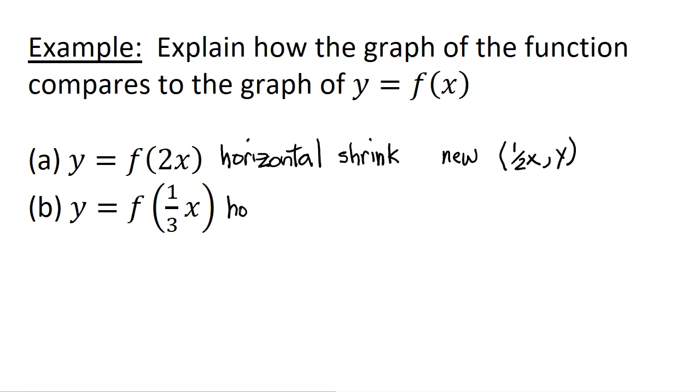It's inside the argument of the function, so it's a horizontal stretch this time. What would we have to do to get back to x? Well, our new point, we'd have to multiply by 3. So we would have 3x and then y. Remember, inside the argument of the function is the x coordinate impact only. Let's have a look.